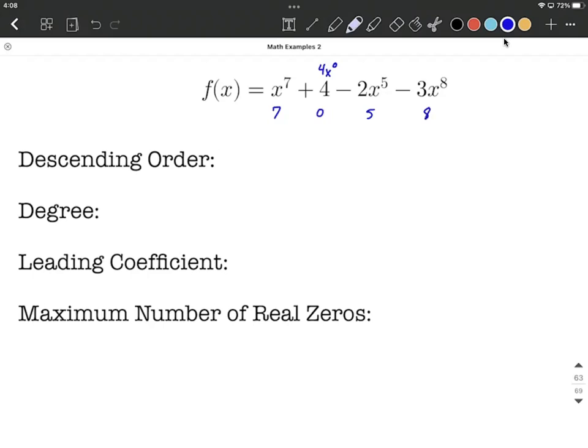Now if we want to rewrite this in descending order, we want to align it from the highest degree term to the lowest. So in descending order, we're going to start with the 8th degree term, so negative 3x to the 8th.